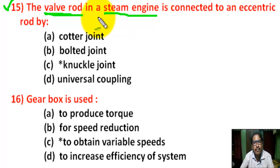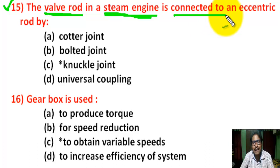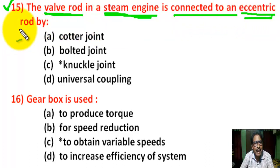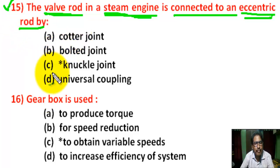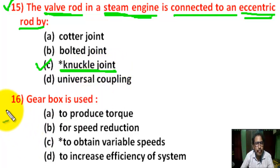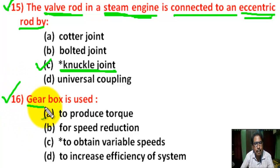Question number 15: the valve rod of a steam engine is connected to an eccentric rod. There are 4 options. Correct answer is C: Knuckle joint.